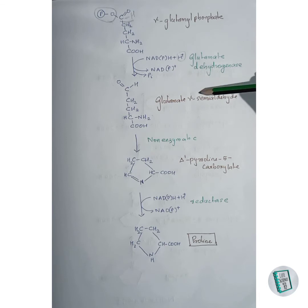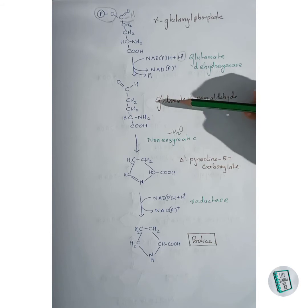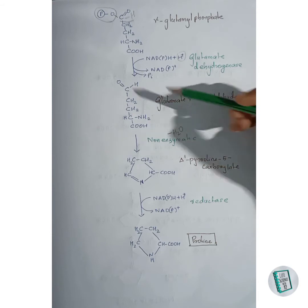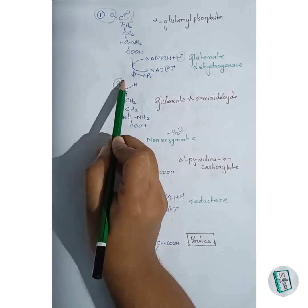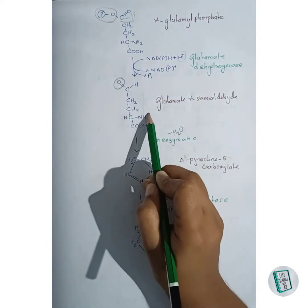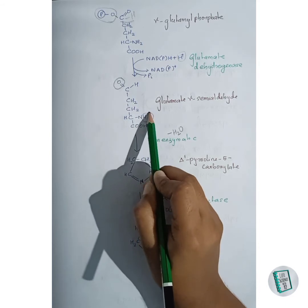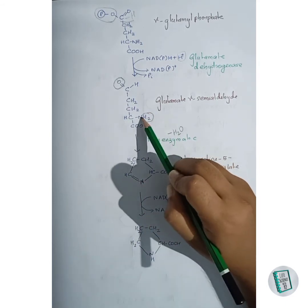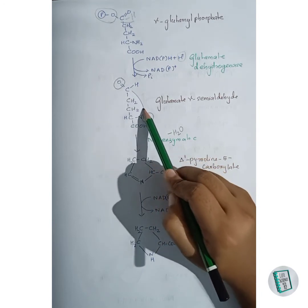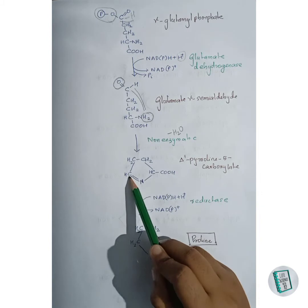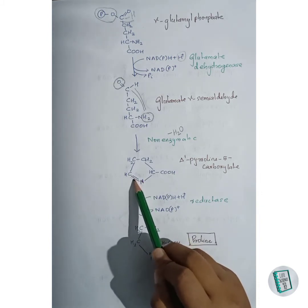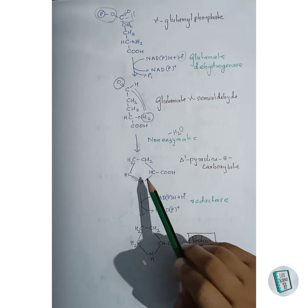Glutamate gamma semi-aldehyde then undergoes a non-enzymatic reaction with removal of a water molecule to form delta-prime pyrroline-5-carboxylate. The oxygen of the water molecule is released, and the two hydrogens of the water molecule are released from the NH₂ group. After removal of the water molecule, the nitrogen joins with the carbon through a double bond, forming this cyclic structure.